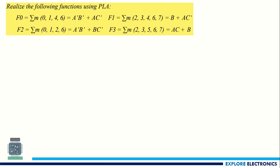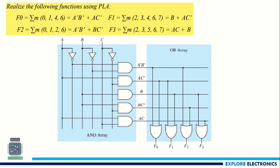Let us implement this using PLA. Here I have taken A, B, C and also A bar, B bar, C bar generated by using NOT gates. Once A, A bar, B, B bar, C, C bar are available, we can implement A bar · B bar using one AND gate. Similarly, we can implement A · C bar using one more AND gate. By taking the output of these two, we need to connect to an OR gate so that we are going to get the function F0. Similarly for F1, F2, F3.